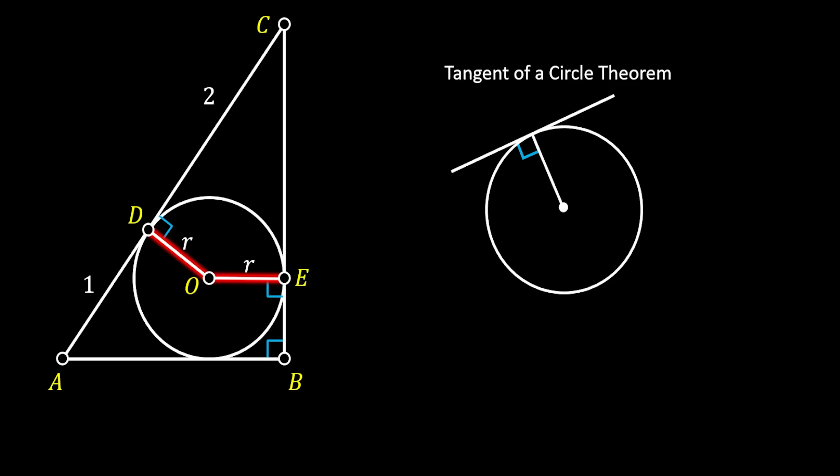The angle at point E will also be a right angle, by using the same theorem, because the line CB is actually tangent to our circle. Finally, let's rotate our radius one last time, vertically down, and label the intersection point as F. The angle at point F will be a right angle as well, by using the same tangent of a circle theorem, because the line AB is actually tangent to our circle. Now let's have a look at the quadrilateral OEFB. You can see that it has four right angles, which means that the angle at point O must be a right angle as well. And since it has two of the same sides with the length of R, that means this quadrilateral is actually a square.